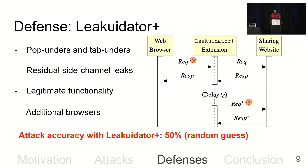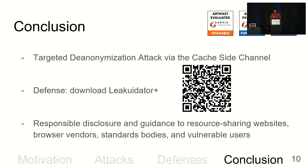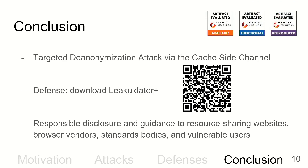After making these improvements, the attack accuracy with the defense enabled dropped to 50%, which is basically equivalent to tossing a coin. In summary, we introduced a novel idea of using a CPU cache side-channel instead of cross-site leaks for targeted de-anonymization attacks. We also increased the attack's target population by applying it to popular websites and more restrictive web browsers. On the defense side, we introduced Liquidator Plus to protect against these de-anonymization attacks.